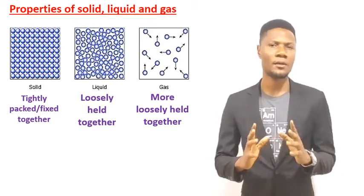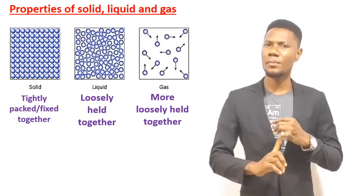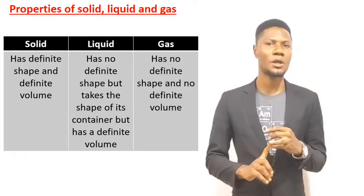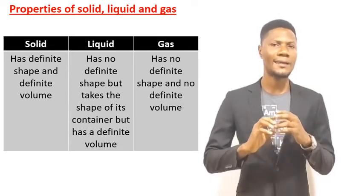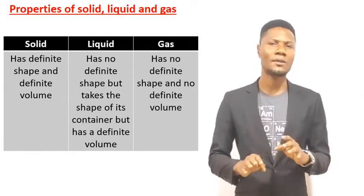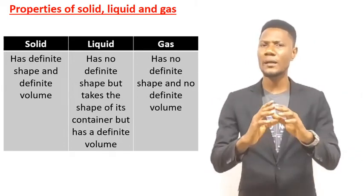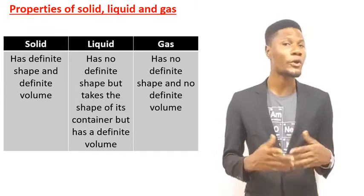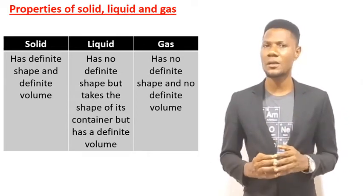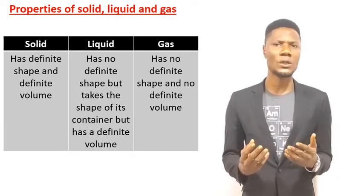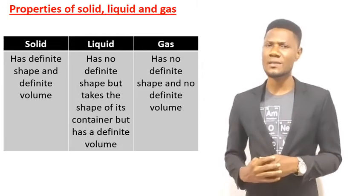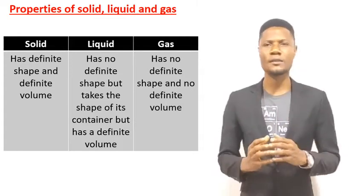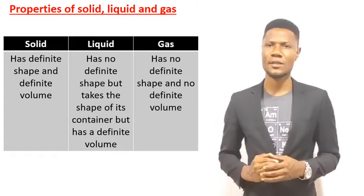Let's look at another property: shape and volume. Solid has a definite shape and a definite volume. Liquid has no definite shape and no definite volume. The shape of a solid can easily be identified — be it rectangular, circular, square, or irregular — and its volume can be measured. But the shape of a liquid is not known until it is poured into a container. If you pour liquid in a circular container, it assumes a circular shape; in a rectangular container, it assumes a rectangular shape, and so on.